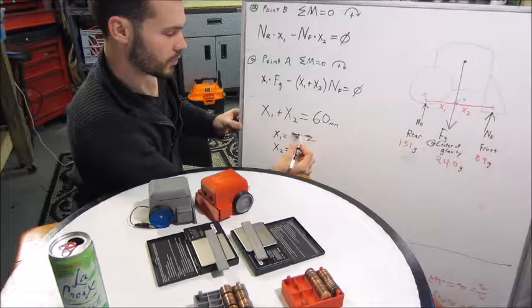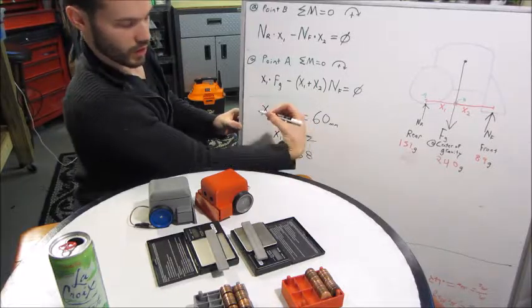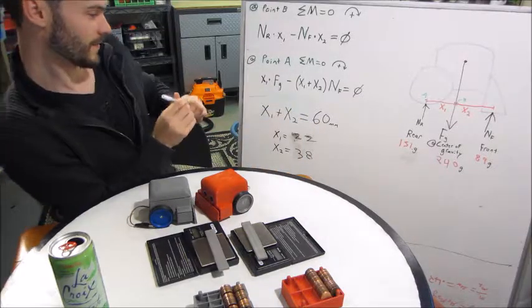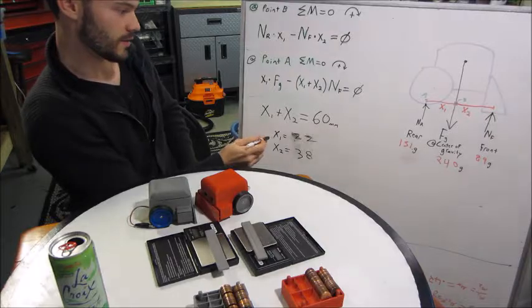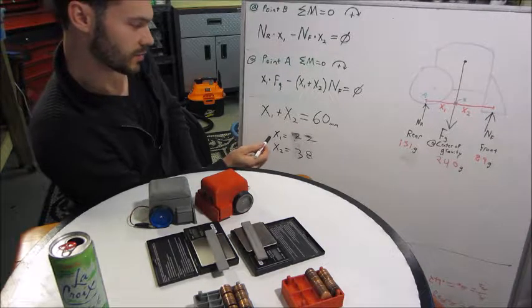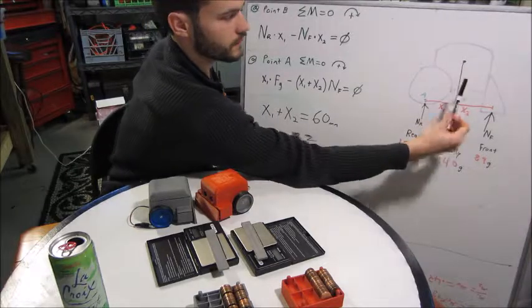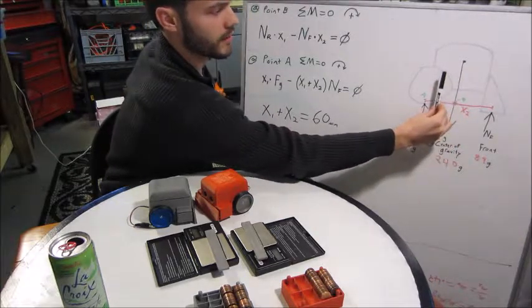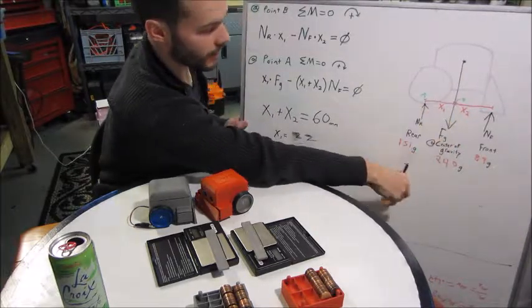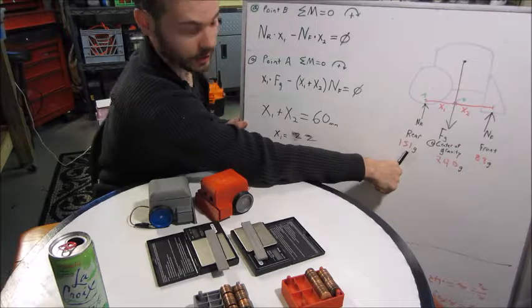All right, so we can see: does this make sense? x₁ is smaller than x₂, so the center of gravity is closer to the back than it is to the front. And yes, that makes sense because we have more weight in the back. Great.